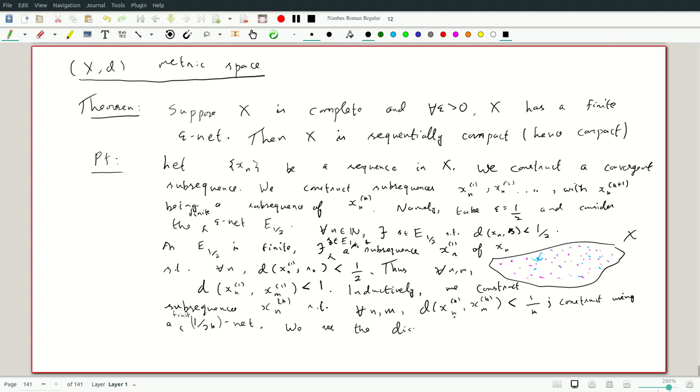What is the diagonal sub-sequence? xii, ith term of the ith term is Cauchy. Okay, and let me just point out the inequality, as if i comma j is greater than or equal to n, then, then we know that xii and xjj, because we took sub-sequences of sub-sequences, are elements of the nth sub-sequence of xnk. Hence, the distance between xii and xjj is less than 1 over n.